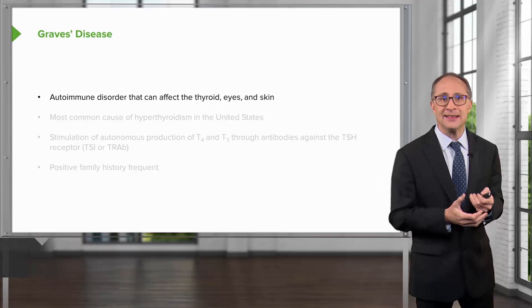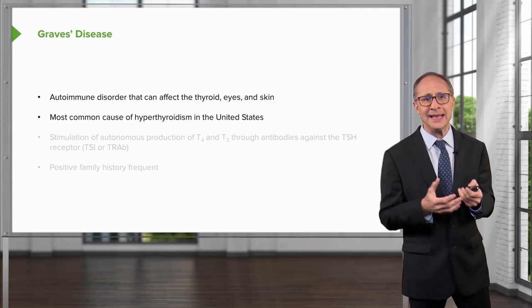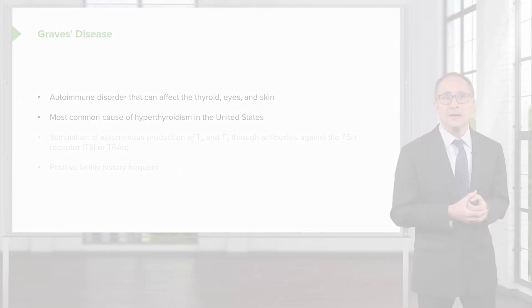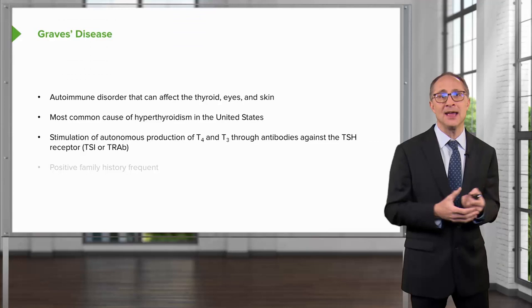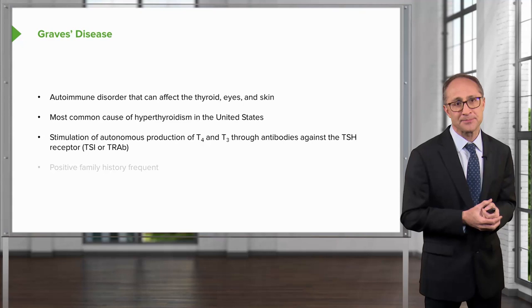Graves' disease is an autoimmune disorder that can affect the thyroid, the eyes, and the skin. It is the most common cause of hyperthyroidism in the United States. Stimulation of autonomous production of T4 and T3 is through antibodies against TSH receptors. These receptors can be checked in the serum as a TSI, or thyroid-stimulating immunoglobulin, or thyroid-releasing antibody. A positive family history is always a frequent accompaniment.